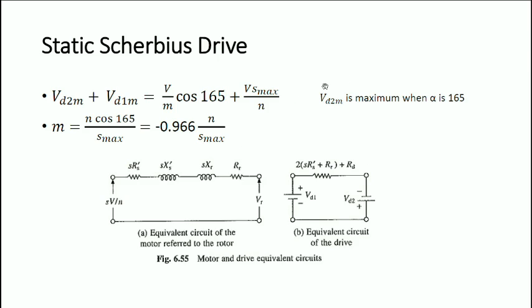The turns ratio M = −0.966·N / S_max. So the turns ratio of the transformer depends on the turns ratio of the motor N, which is fixed once you select the motor, and on S_max — the maximum slip — which is determined by the minimum speed required for the drive. These are the two criteria for selecting M.